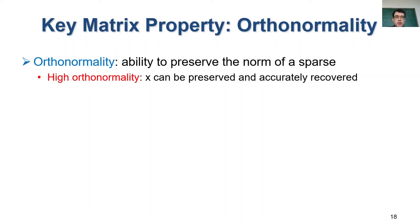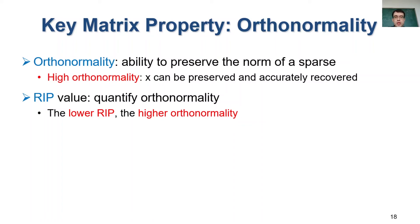So compressive sensing prefers highly orthonormal sensing matrix to guarantee the recovery accuracy. Compressive sensing also quantifies the orthonormality using a metric called RIP. The lower RIP, the matrix is more orthonormal and the recovery results are more accurate.